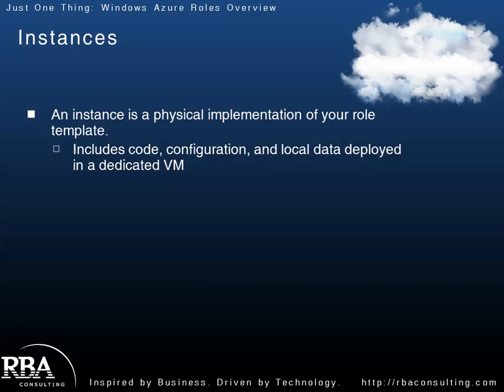Think of a role as your class definition — like 'public class MyAwesomeClass'. Instances are instantiations of that class. Just as you instantiate a class at various points throughout your code, an instance is the physical implementation of a role running in its own dedicated VM.